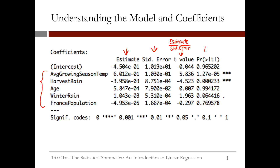The last column gives the probability that a coefficient is actually 0. It will be large if the absolute value of the t statistic is small, and it will be small if the absolute value of the t statistic is large. We want variables with small values in this column. The easiest way in R to determine if a variable is significant is to look at the stars at the end of each row. Three stars is the highest level of significance, and corresponds to a probability less than 0.001.